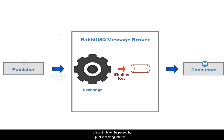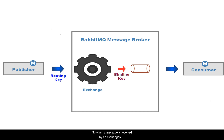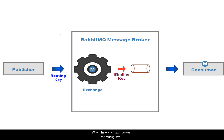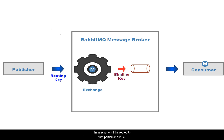The next attribute is the routing key. This attribute will be passed by the publisher along with the message it publishes. When a message is received by an exchange, it compares the routing key with each and every binding key it has. If there is a match between the routing key passed by the publisher and the binding key, the message will be routed to that particular queue.